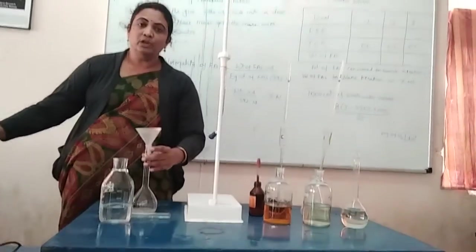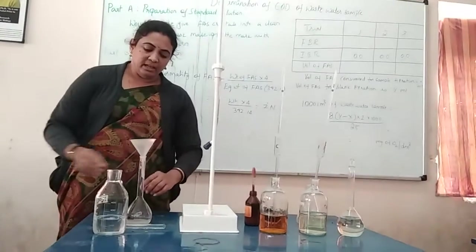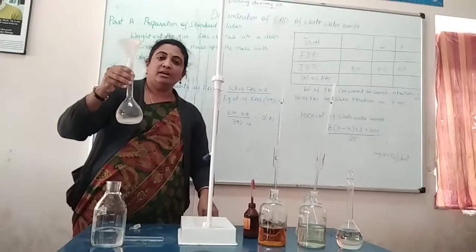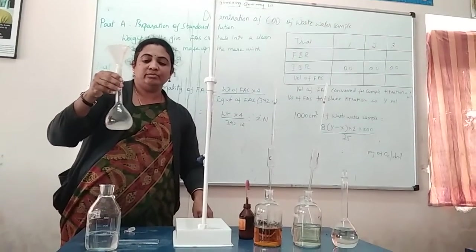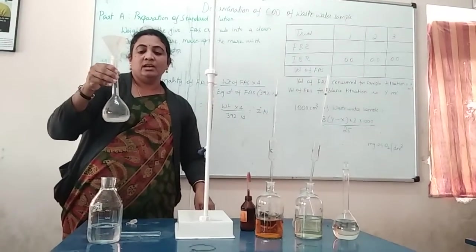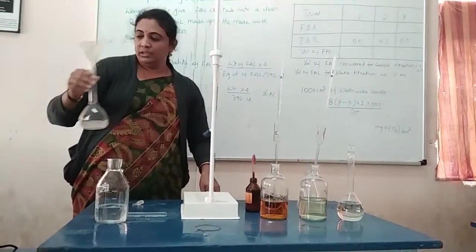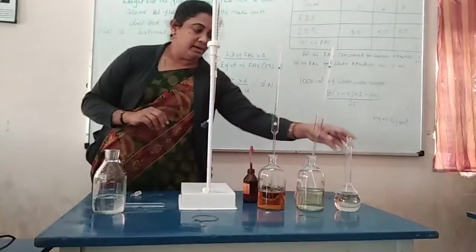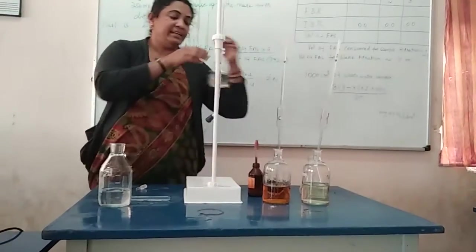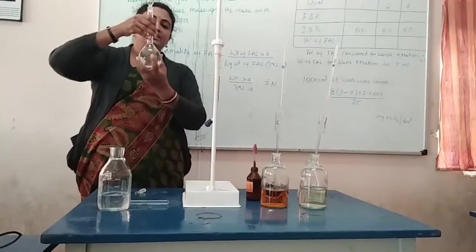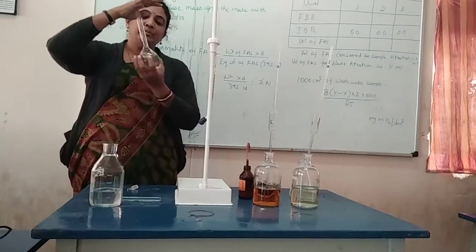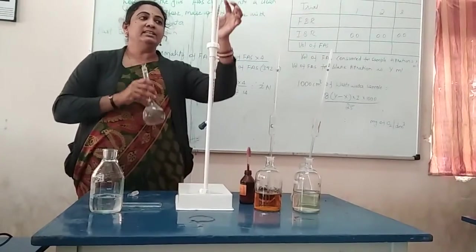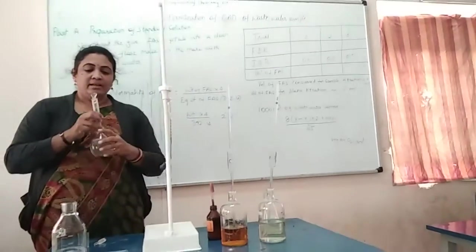We are adding H₂SO₄ to prevent the hydrolysis of FAS salt into ferric salt. After adding H₂SO₄, the next step is to make the solution up to the mark. You will be getting a solution like this — I have already made this. After making up to the mark, you have to mix it very well and fill it in the burette.